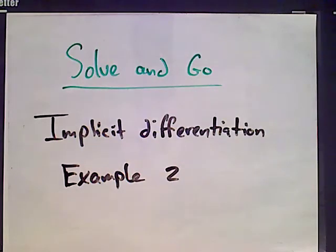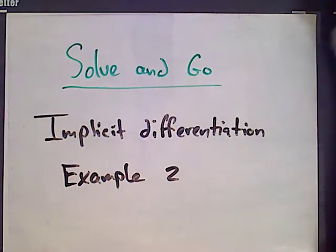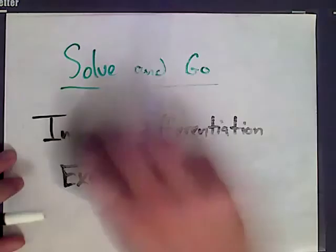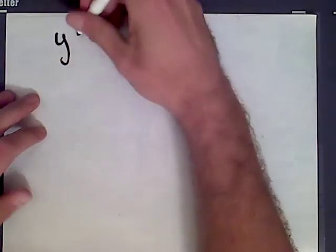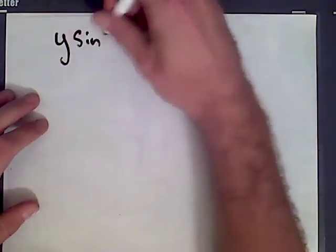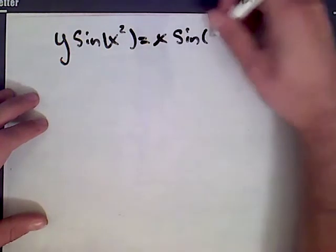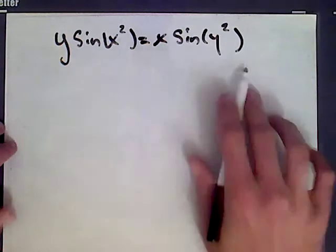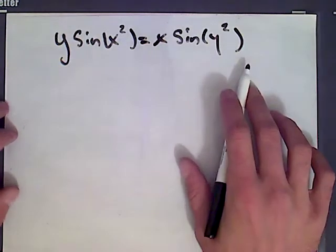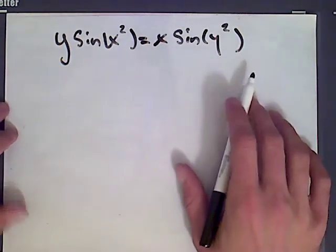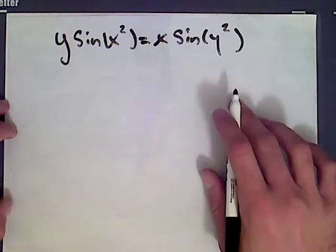Hi, welcome to SolveAndGo.com. Today we're going to do a second example of finding a derivative using implicit differentiation. Let me write down the implicitly defined function, or the implicit equation. We have y times sine of x squared equals x times sine of y squared. Here y is defined implicitly in terms of x, meaning we don't have something of the form y equals a formula just involving x.